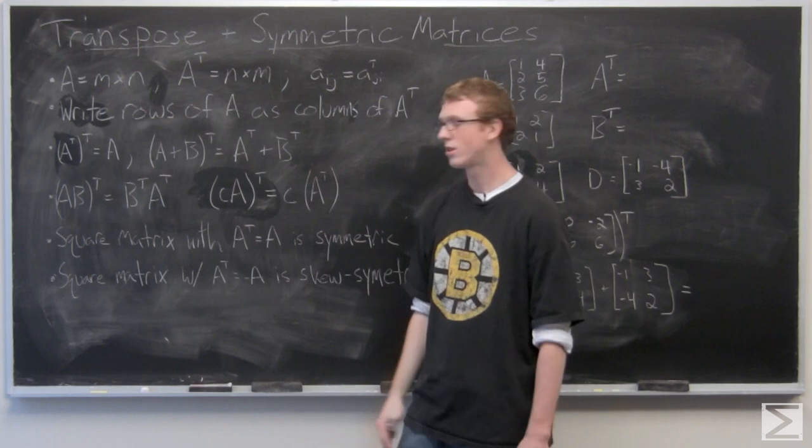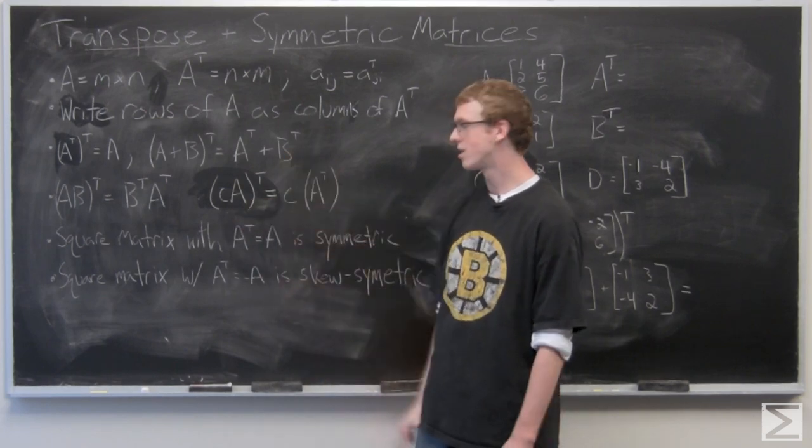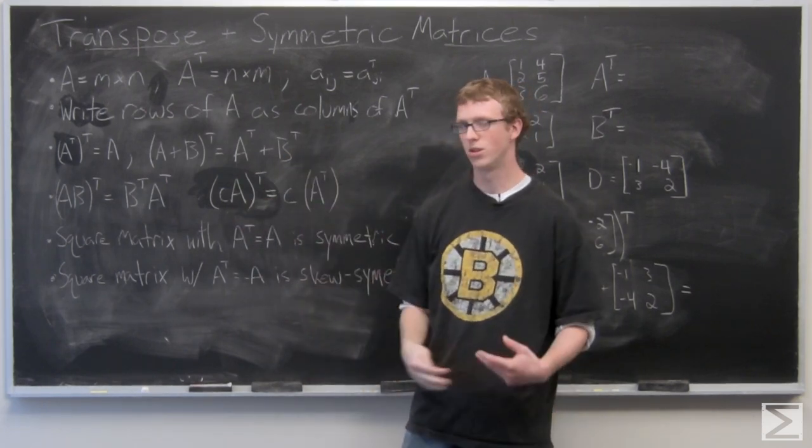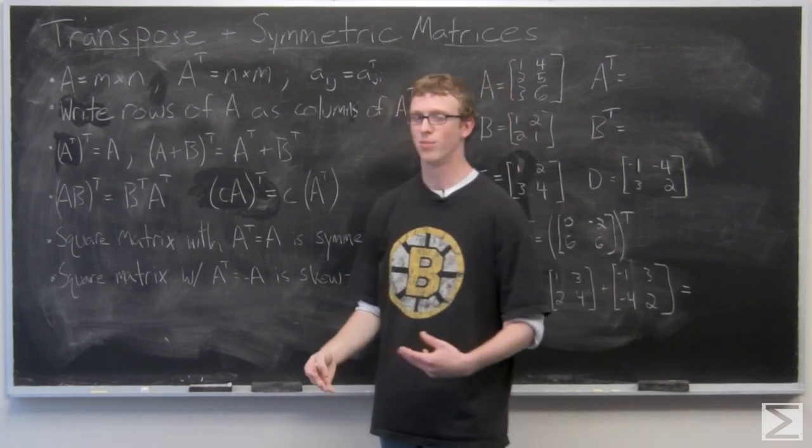And a scalar multiple of A, CA transpose, is just going to be the normal transpose of A multiplied by C. So both work.